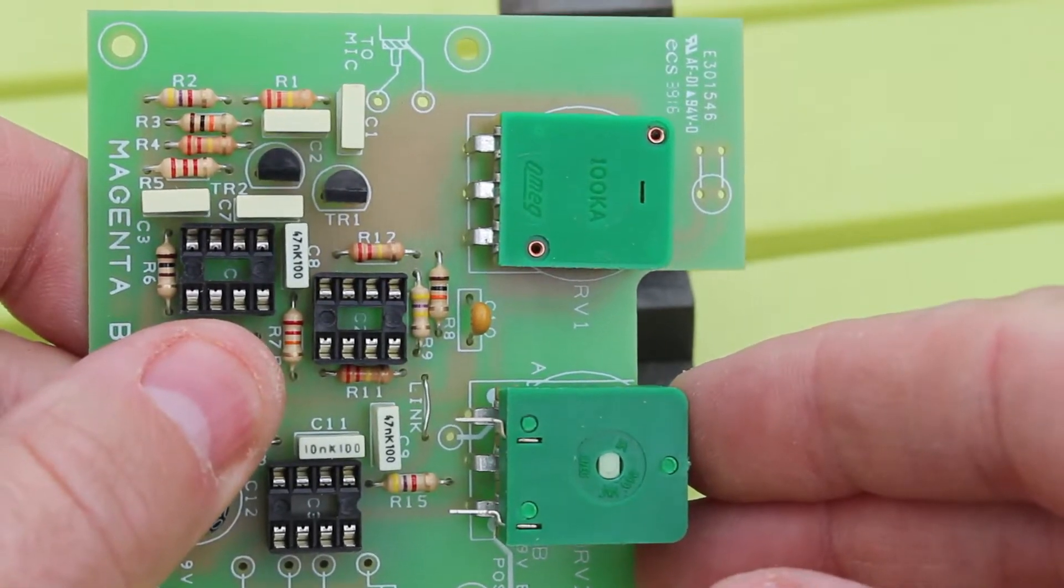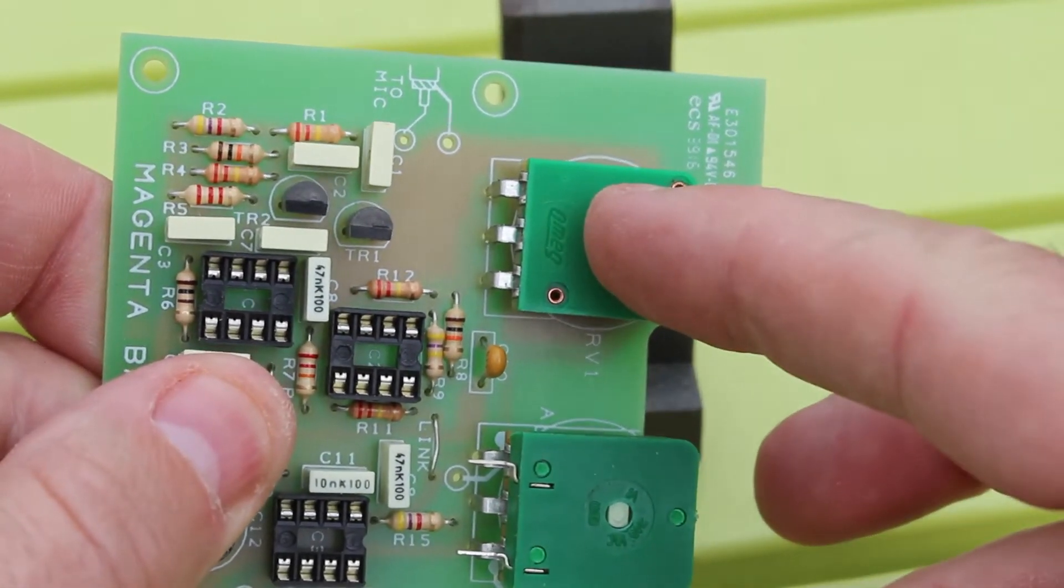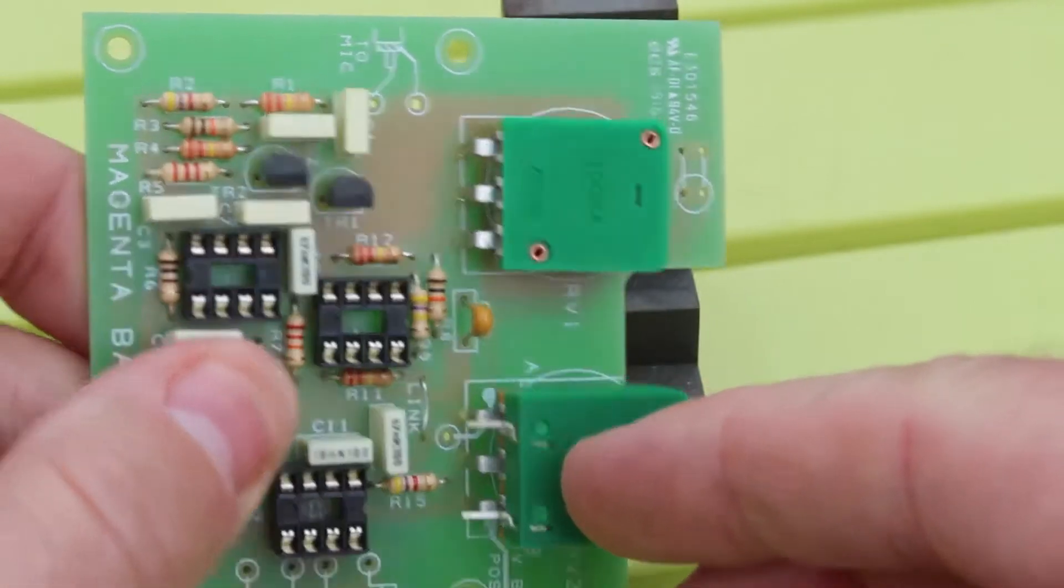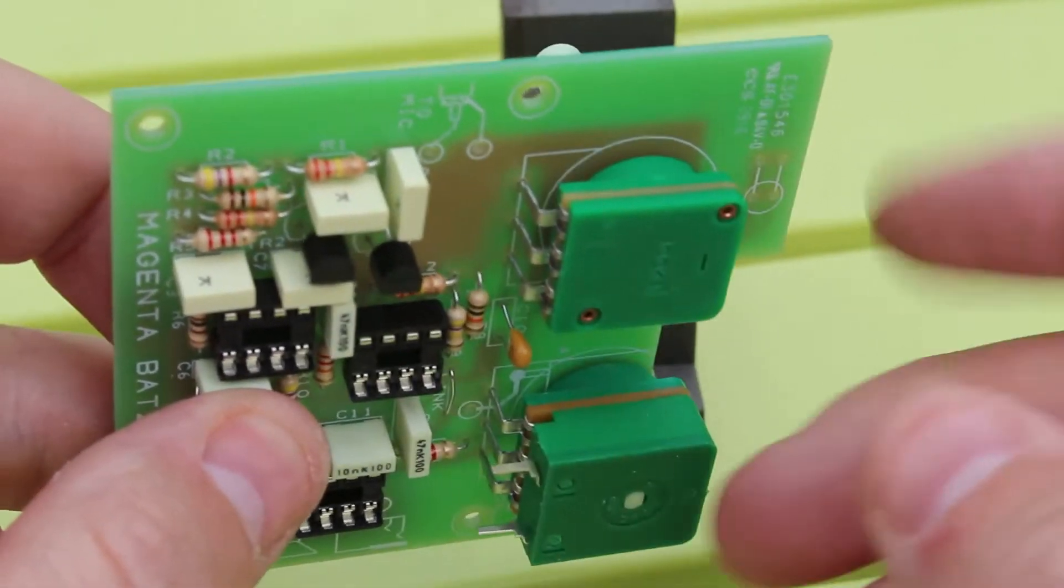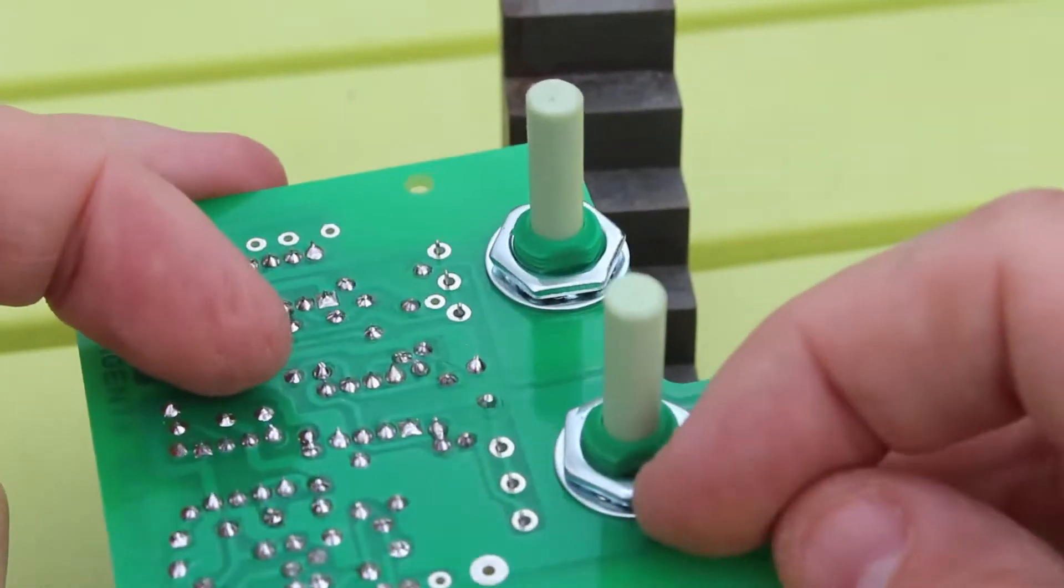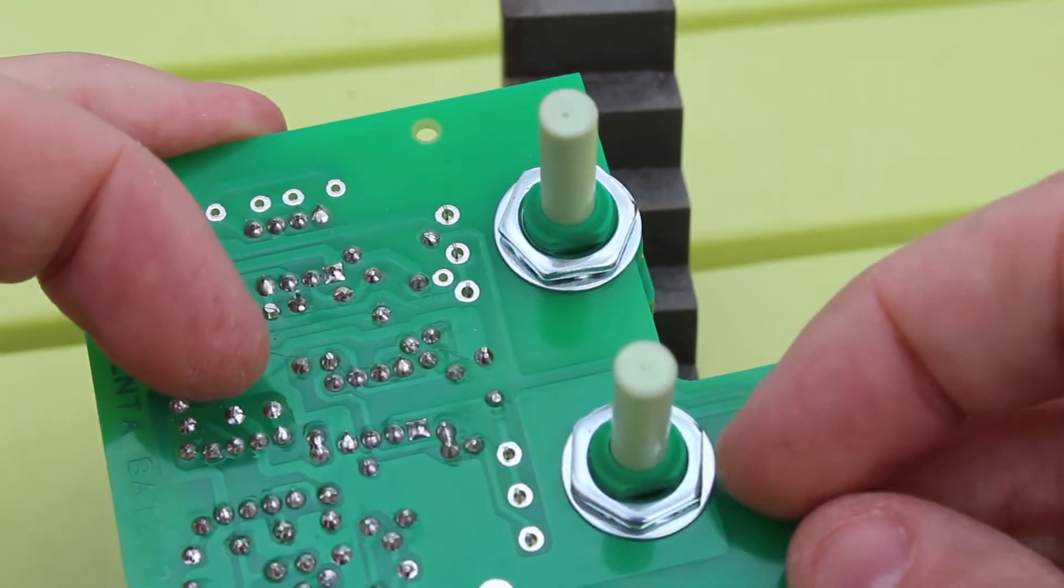The next bit to do is mount the two pots. The pot on this side and the pot with a switch on this side. Mount them from this side, the component side, and then put the nuts and washers on this side.